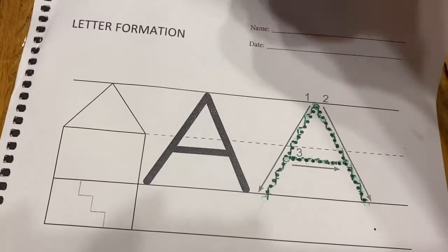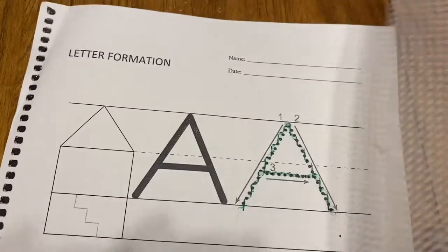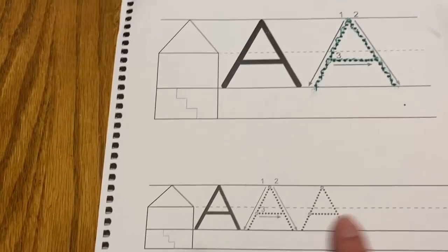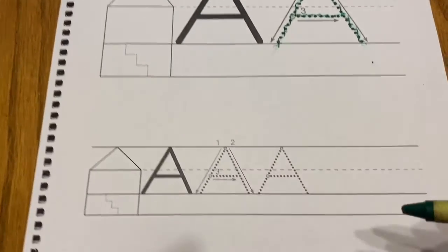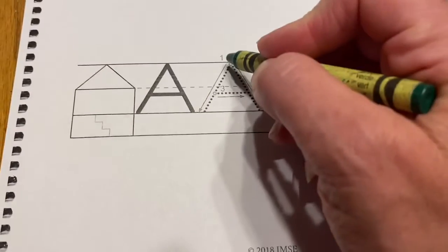When you feel comfortable, take your bumpy screen out. You can put it aside, then it's nice and smooth. No bumps. You're going to practice tracing the A.